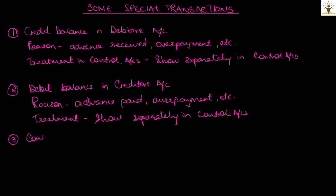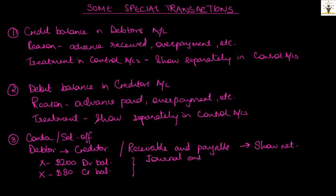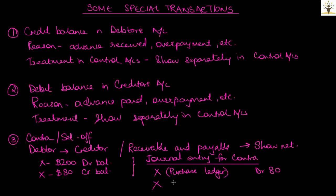The third special transaction is a contra entry or set-off entry. It may be quite possible that a debtor of the business is also a creditor, hence an amount is both receivable and payable at the same time. Thus, the debit and credit balances shall be set off against each other. For example, X being a debtor — receivable from X is $200 — and X is also a creditor — payable to X is $80. So a contra entry can be passed for $80 showing a net amount receivable of $120. In the journal, X's account in the purchase ledger shall be debited by $80 and X's account in the sales ledger shall be credited by $80. So in a sales ledger control account, the contra entry is credited, whereas in a purchase ledger control account, the contra entry is debited.